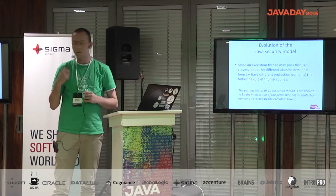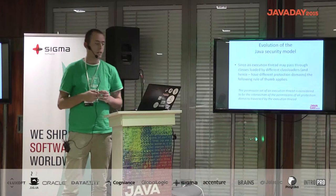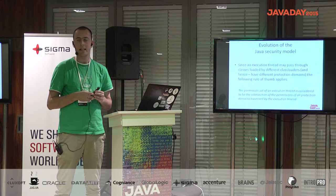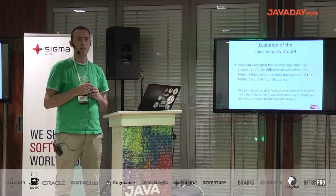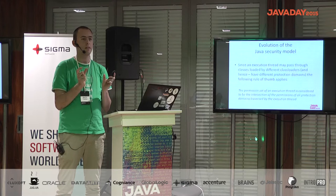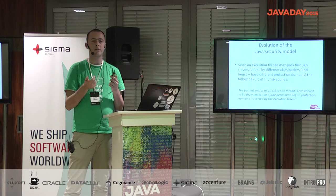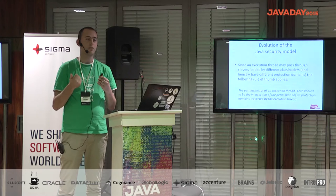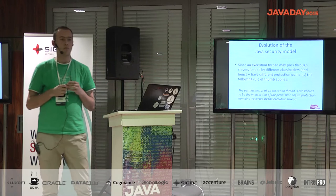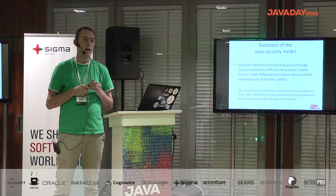Since the execution of source code can pass through multiple threads and classes can be loaded from different class loaders, we have multiple protection domains, meaning the same executing source code can have different sets of permissions. The JVM deals with this by taking the intersection of the two protection domains. For example, if a WAR file is allowed to write to the file system and open a socket, but the application server service it uses is only allowed to write to the file system, then the effective set of permissions is only file system write — the socket permission is lost because one protection domain doesn't have it.